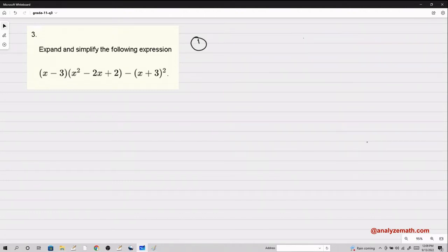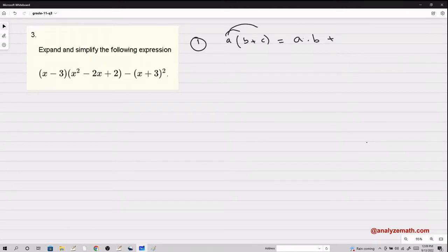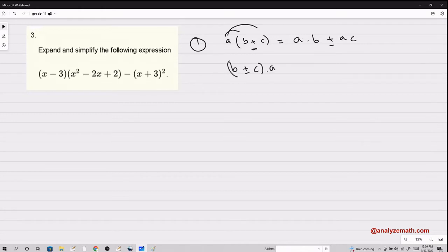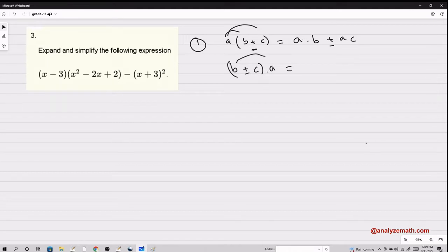The first one is the distribution in algebra. If I have a multiplied by b plus c, I can distribute the a over b and c so that will be a multiplied by b plus a times c. If it's a minus, I put a minus here. So the distribution can also be written as ba plus or minus ca.